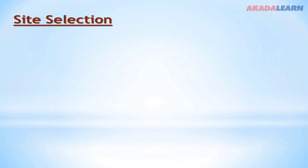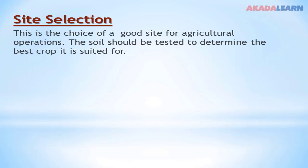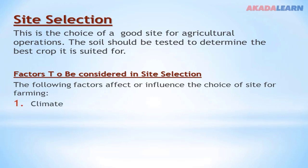What is site selection? Site selection is the choice of a good site for agricultural operations. The soil should be tested to determine the best crop it is suited for. In site selection, there are factors to be considered. The factors are climate, soil type, and topography — the shape of the land.